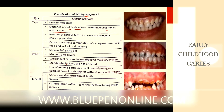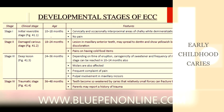Regarding the developmental stages of ECC, there are 4 stages. Stage 1 is the initial reversible stage from 10 to 18 months. There will be no pain, but occasionally there will be cervical and interproximal chalky white demineralization. It is called the reversible stage. Stage 2 is the damaged caries lesion stage, from 18 to 24 months. The lesion affects the maxillary anteriors, spreads to dentin, shows a large brown discoloration, and the patient may have pain on having cold food items.